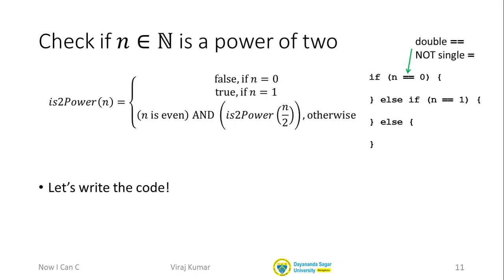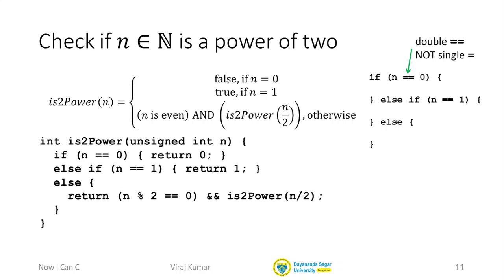I want to make some important remarks about the code we have just seen. The first thing I want to observe is that there is a great deal of similarity between the last condition in the mathematical definition — if n is a power of 2, if n is even and n over 2 is a power of 2 — and the last return statement in C, where we write n is even by doing n remainder 2 double equals zero, and the recursive call to is2power of n over 2.